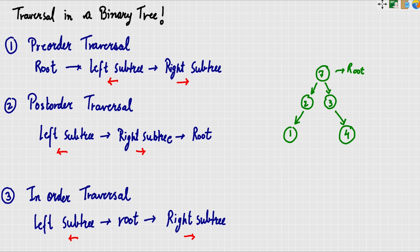Now I will show you pre-order traversal on the tree. Pre-order means first root is written. So I write 7 first. Then I go to the left sub-tree and apply pre-order recursively. I leave a placeholder for the left sub-tree result and will fill it in.